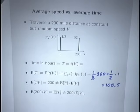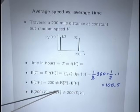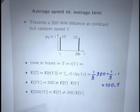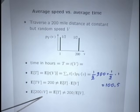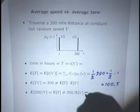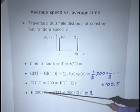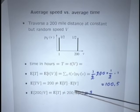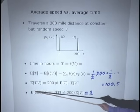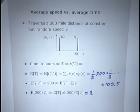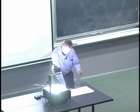Another way to see this: time is defined as 200/V, so E[T] = E[200/V] ≈ 100. But 200/E[V] = 200/100.5 ≈ 2, which is very different. So we have a nonlinear function of V, and the expected value of the function is not the same as the function of the expected value. You cannot interchange expected values and nonlinear functions.